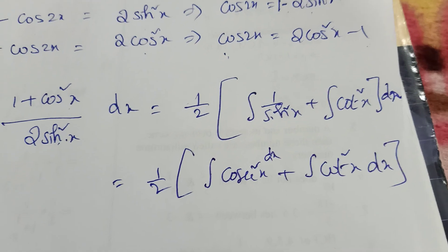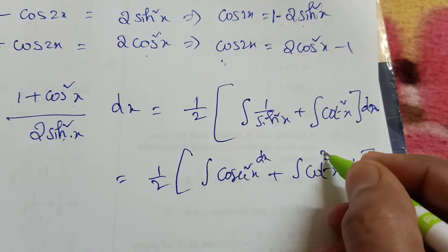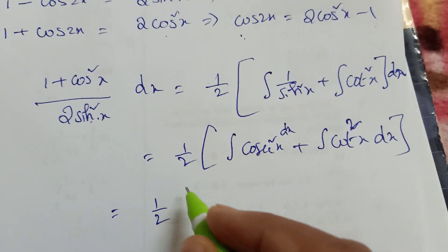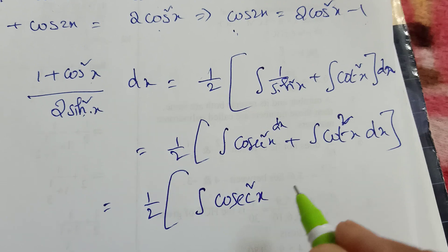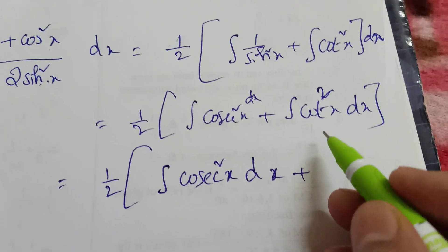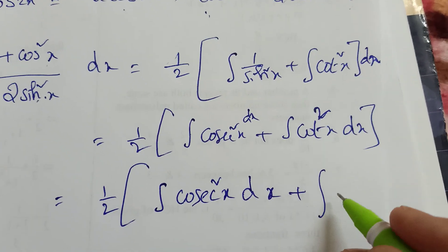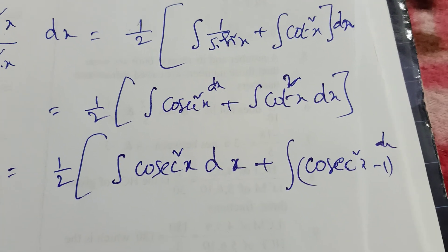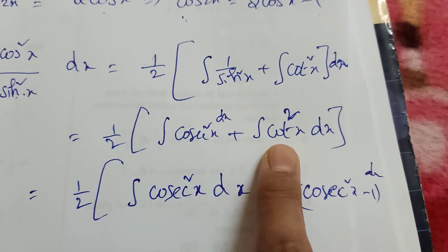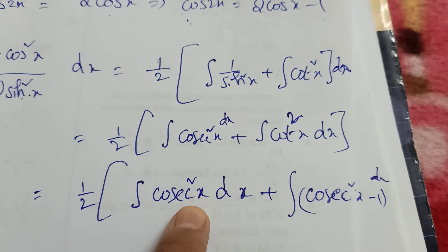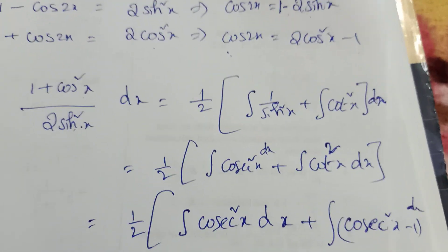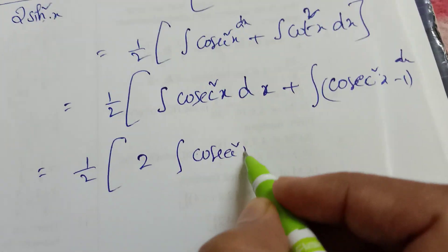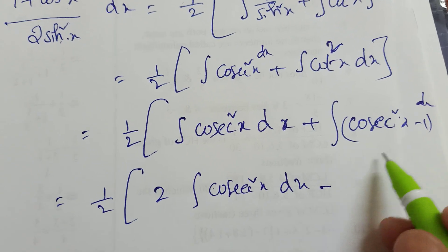Now the integration of cot²x has no direct formula, so we convert it using the identity: cot²x = cosecant²x - 1. So we have (1/2) times integration of cosecant²x dx plus integration of (cosecant²x - 1) dx. Now combining: 2 cosecant²x terms appear, giving us 2 integration of cosecant²x dx minus integration of 1 dx.